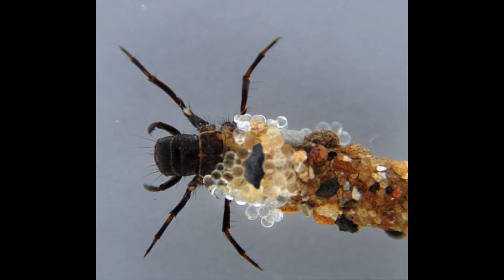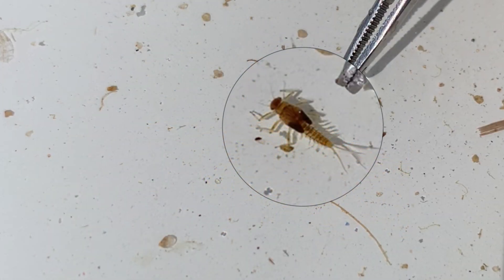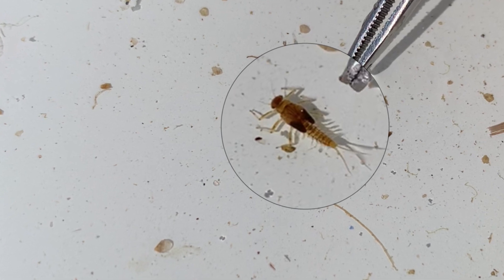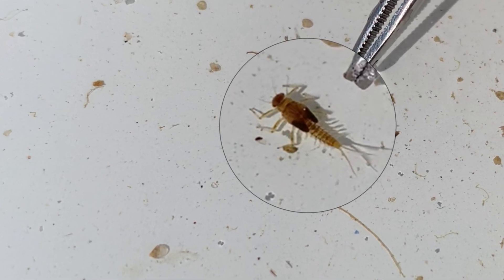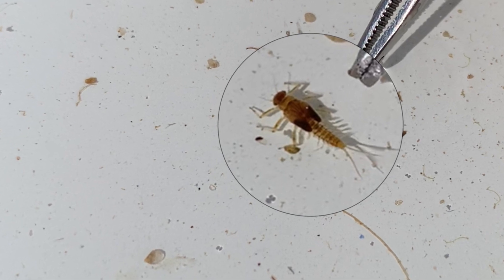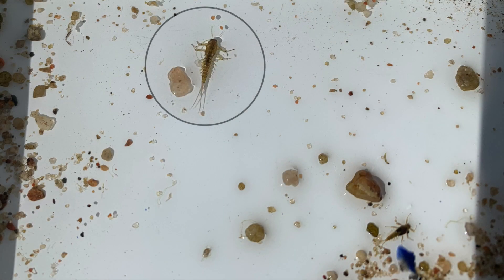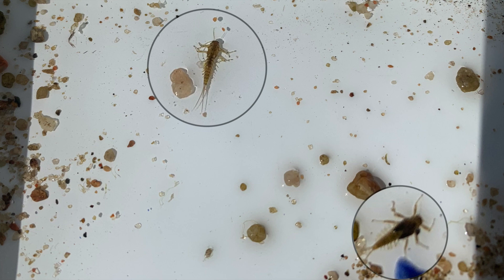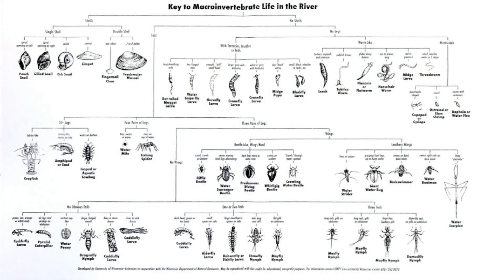Now we can show you some of the invertebrates that we collected. Unfortunately we did not collect any caddisfly larvae — which you'll sometimes find in their stone houses, and they're really cool — but we did collect lots of stoneflies and mayflies. Here you can see a magnified image of a stonefly with its three pairs of legs and two tails. Next we have a magnified mayfly nymph, which has three tails, although one of the tails is really short here. We can compare the mayfly to the stonefly in the bottom right corner of this image. That is all for this video — hopefully you'll all get the chance to do some aquatic macroinvertebrate sampling in the future and see some of these for yourself.